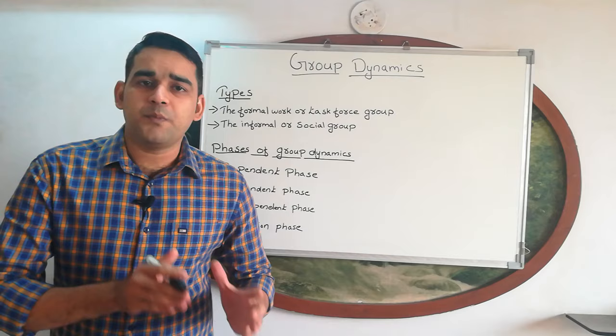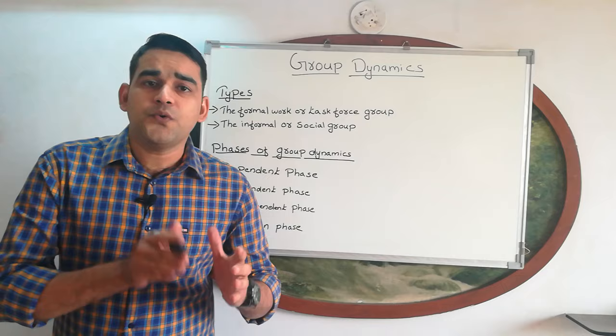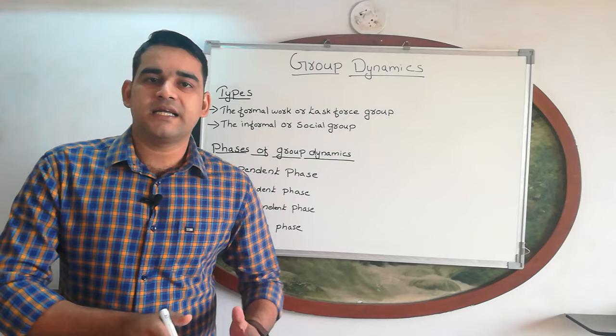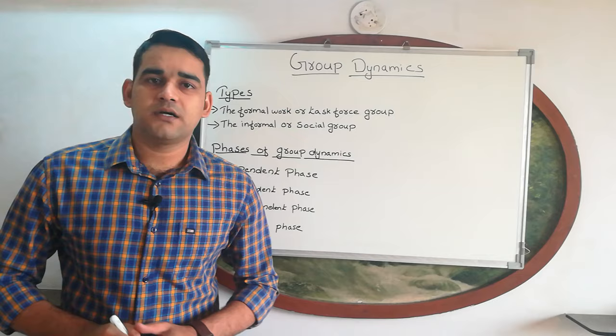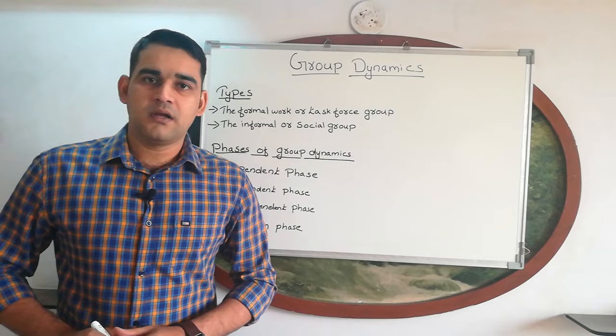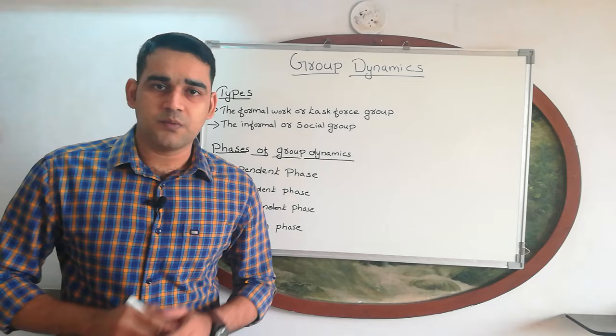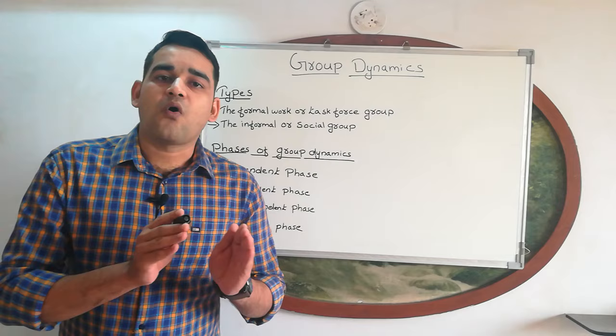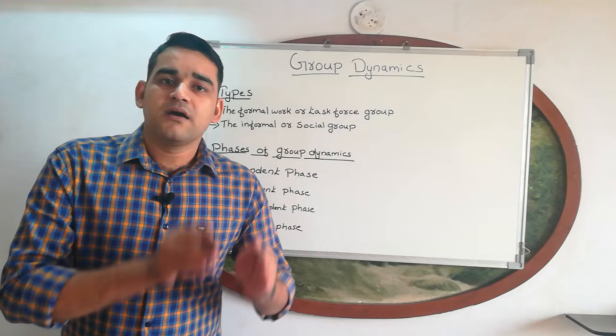Group dynamics — the word comes from two words, that is group and dynamics. A group means two or more individuals work together to achieve a common goal. Two or more people will be there in a group, working together to achieve a common goal. That is called a group.